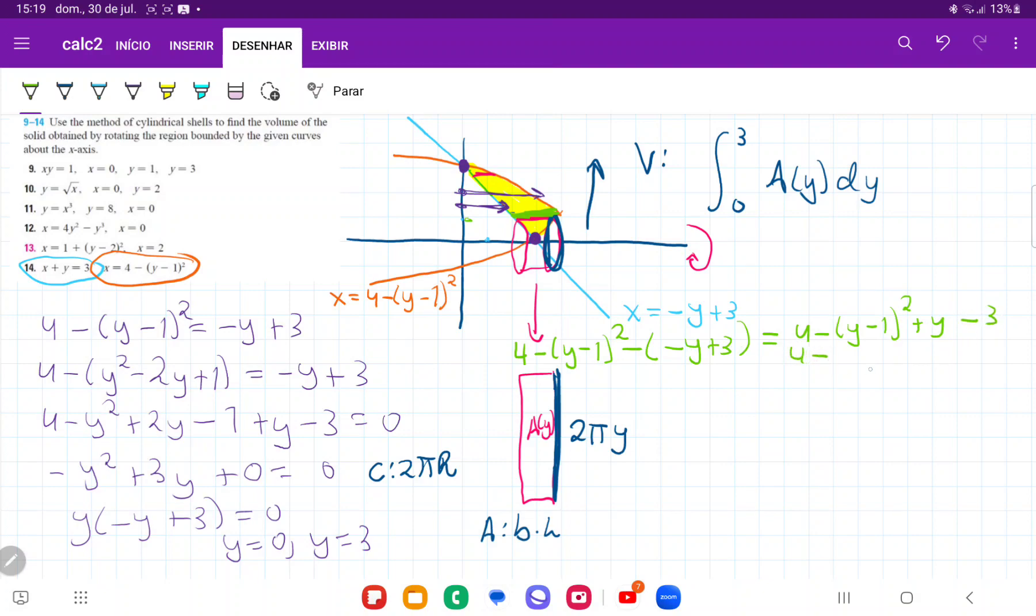So that gives us 4 minus, I'm going to FOIL this out, so y squared minus 2y plus 1 and then plus y minus 3.